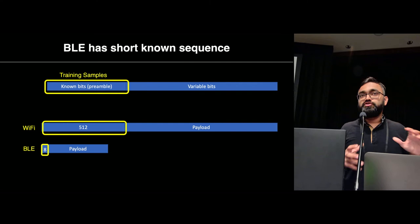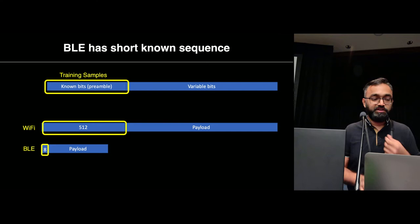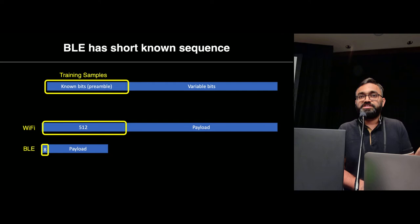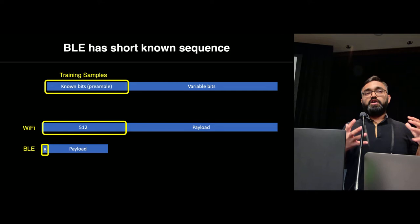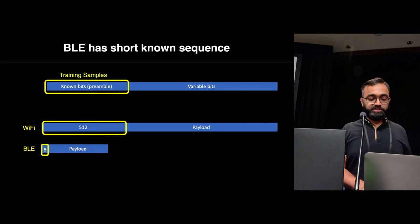In Wi-Fi, primarily because of OFDM decoding, you need a long known sequence to correct for distortions before even correctly decoding — which is why such a long sequence exists, making these measurements easy. Unfortunately, in BLE, you don't need such a long known sequence because even a coarse CFO estimate is sufficient to perform BLE decoding. So the BLE known preamble sequence is very few symbols in length, making it very hard to use those symbols alone for precise parameter estimation.